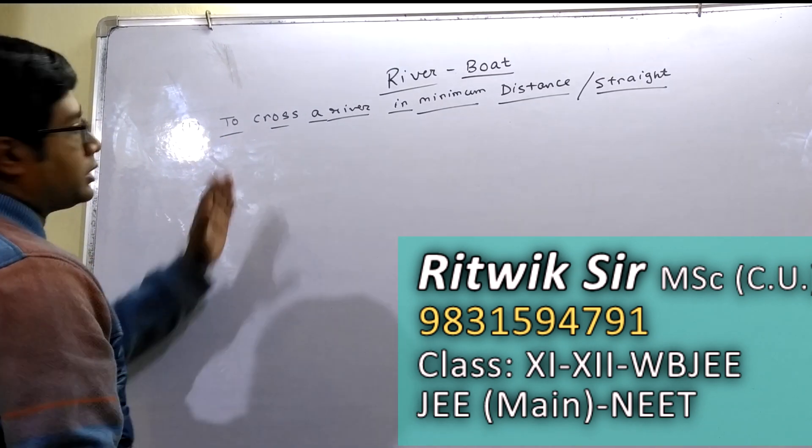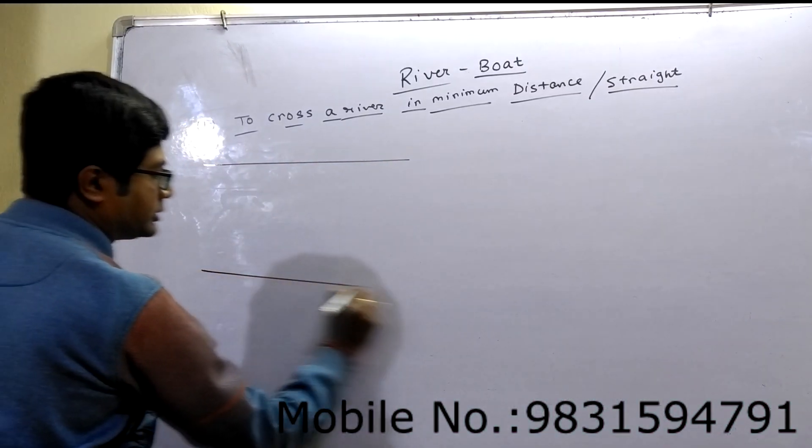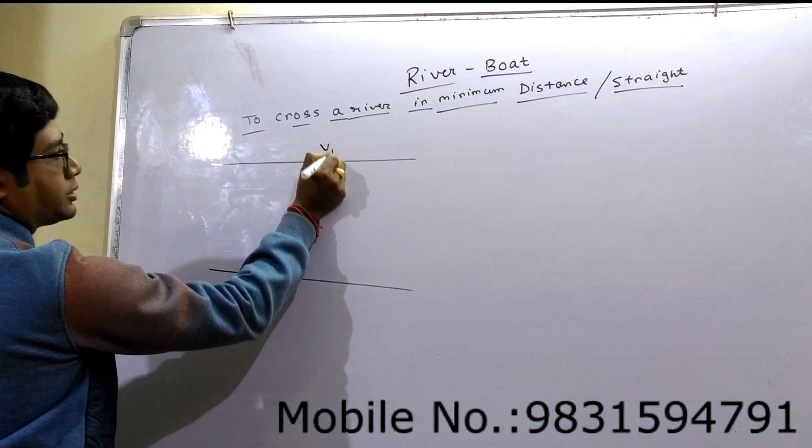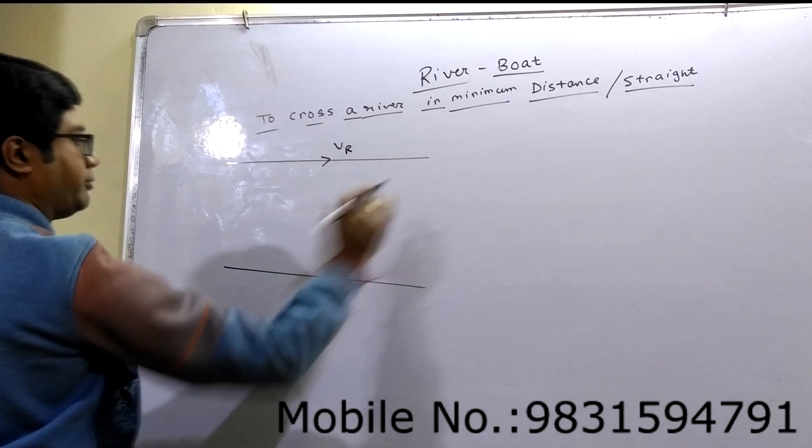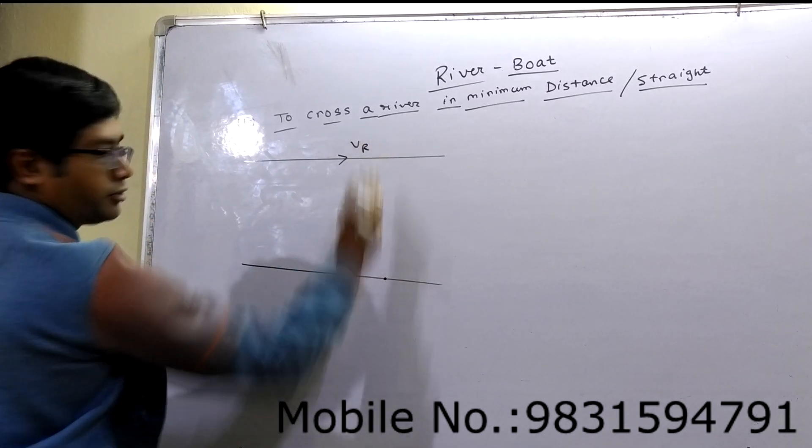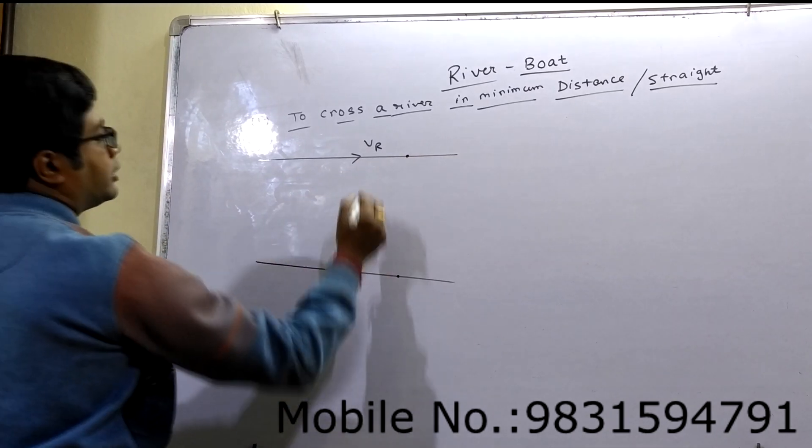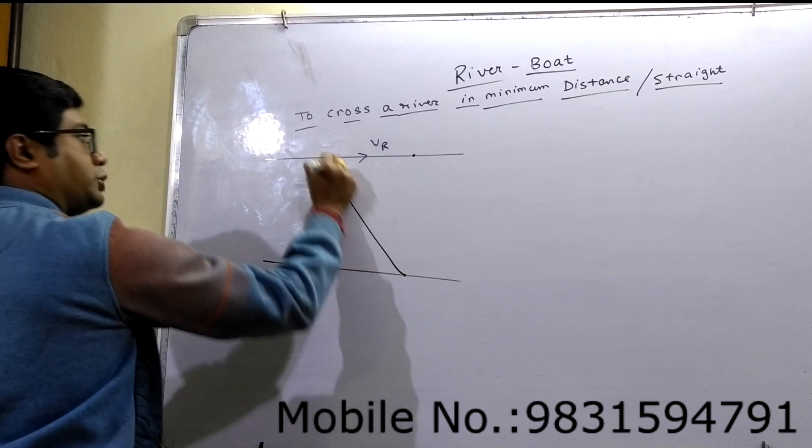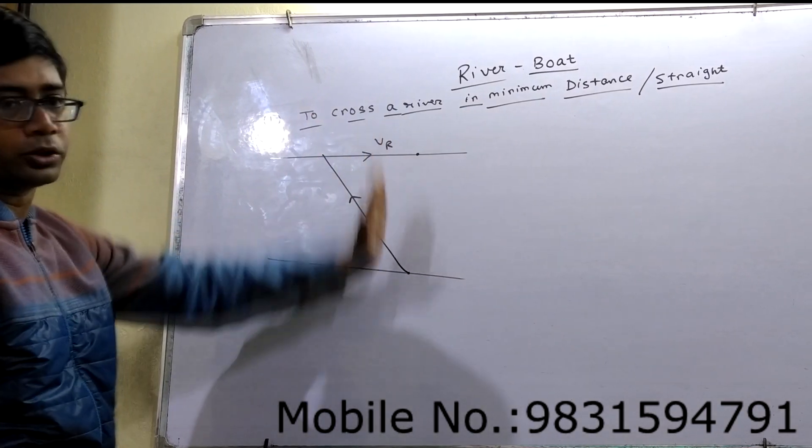So first, to cross a river in minimum distance. A river is there with a stream flowing in this direction. A man has to cross this river straight, means from this point to this point. So he should swim at this direction so that due to stream, he will go straight.